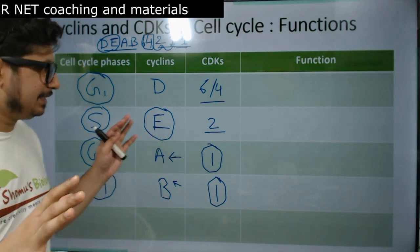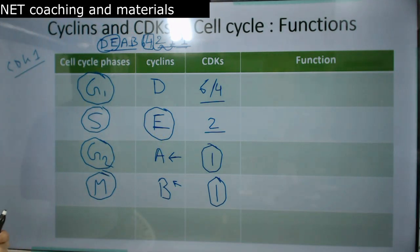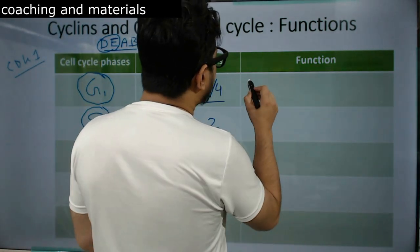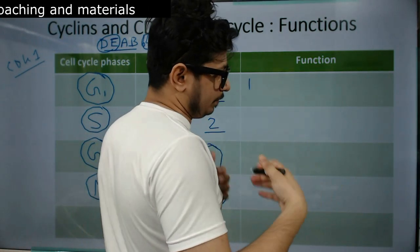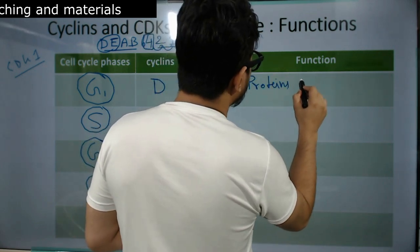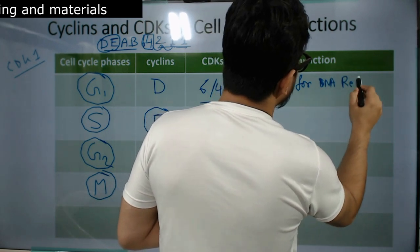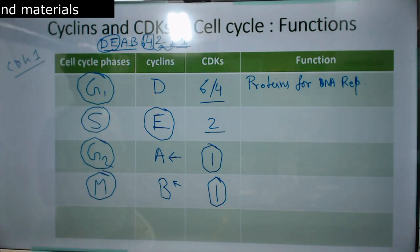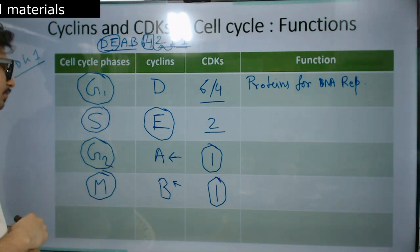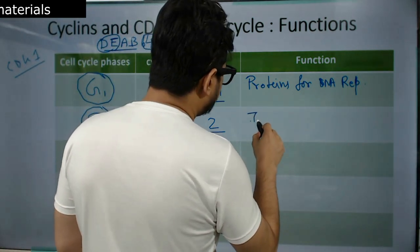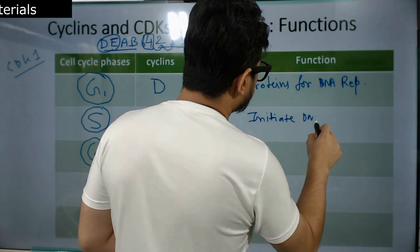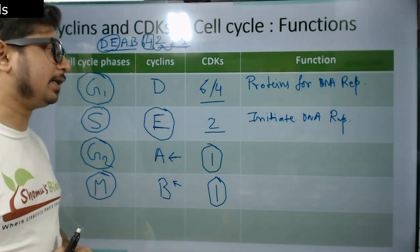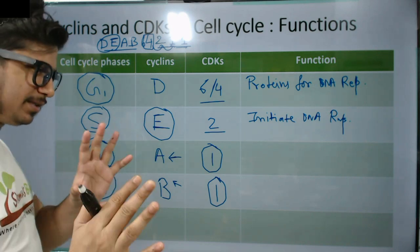Now we'll talk about the function of different CDK complexes. The Cyclin D–CDK6/CDK4 complex in the G1 phase helps in the production of proteins and gene products necessary for DNA replication. The next one — Cyclin E–CDK2 — is the S phase cyclin, and its job is to initiate DNA replication. That's the job of CDK2 and its cyclin partner Cyclin E, though it remains somewhat controversial whether there is a specific cyclin for this phase.